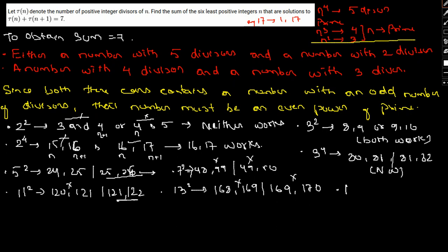For 17², we have (288,289) and (289,290). Neither will work. Finally, for 19², we have (360,361) and (361,362). Only (361,362) works.